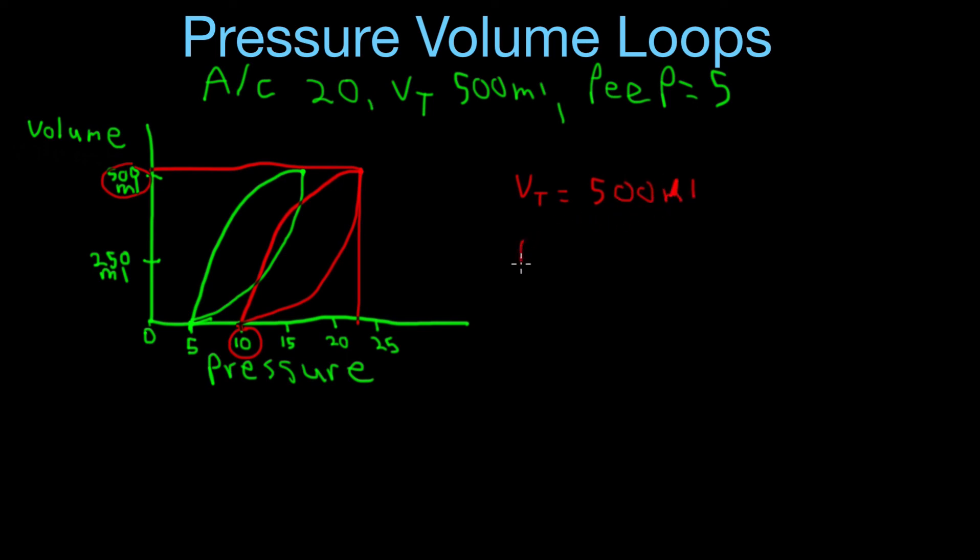Okay, we got the PEEP equals 10 on the red loop and the peak airway pressure equals about 22 it looks like.